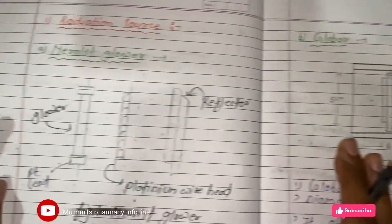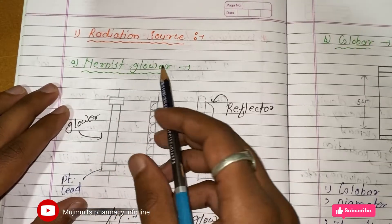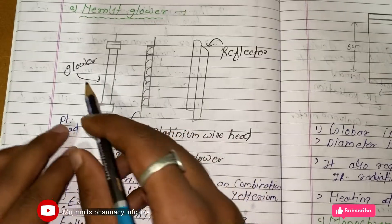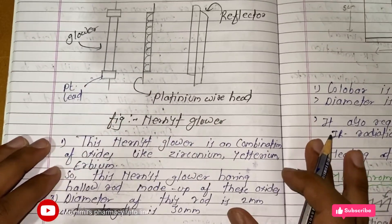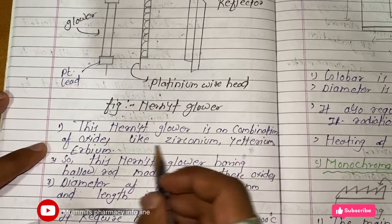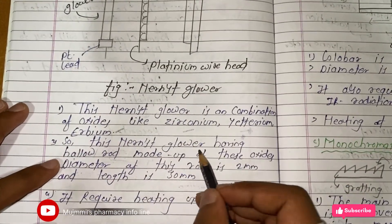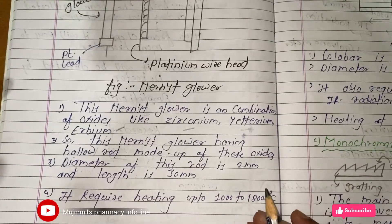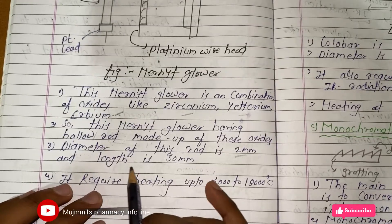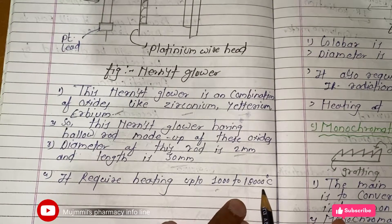Let's see the radiation sources used in IR spectroscopy. The first is the Nernst glower. It has a reflector, a platinum wire head, and a glower with a platinum head. The Nernst glower is a combination of oxides such as zirconium, yttrium, or erbium. It has a hollow rod made of these oxides with a diameter of 2 mm and length of 30 mm, and it requires heating up to 1,000 to 1,800 degrees Celsius to produce IR radiation.